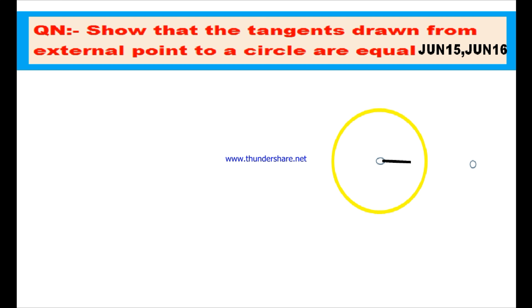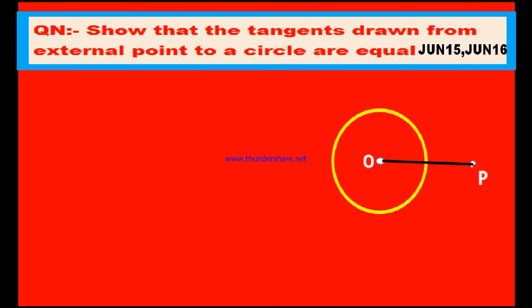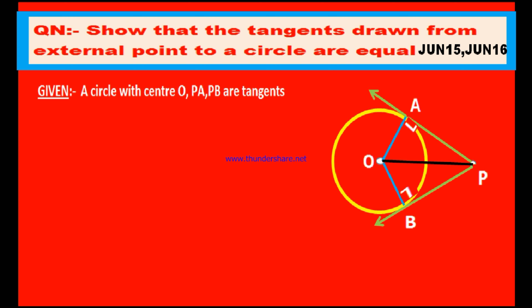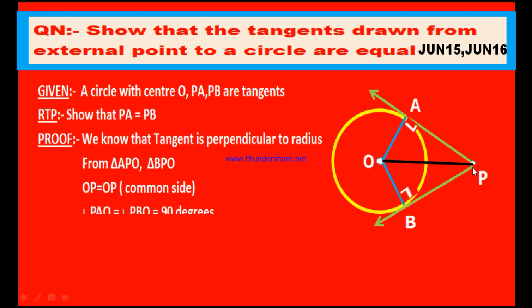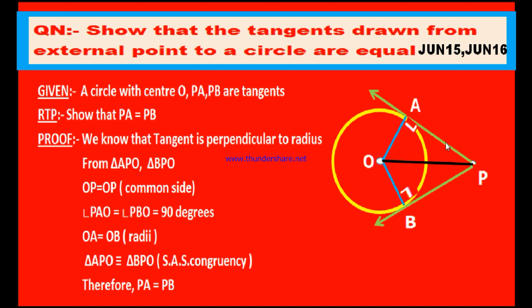Here is a circle with center O and there is an external point P. You can draw two tangents from point P onto the circle. We have to prove that PA is one tangent and PB is the second tangent, and these two tangents are equal in length. In order to prove it, let us take the radii OA and OB. It is given that a circle with center O, PA and PB are tangents, and P is an external point. RTP: to show that PA is equal to PB.